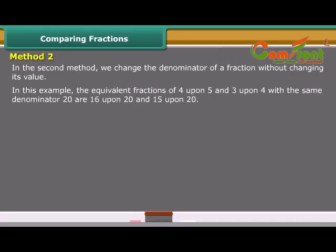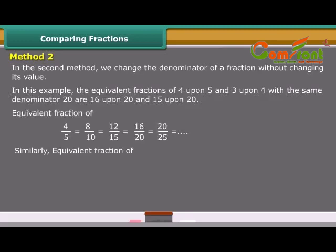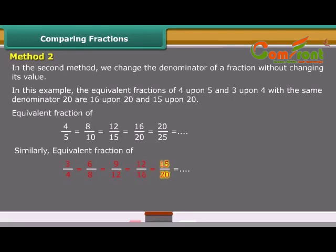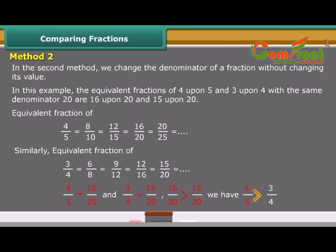In Method 2, we use equivalent fractions. For example, the equivalent fractions of 4 upon 5 and 3 upon 4 with the same denominator 20 are 16 upon 20 and 15 upon 20. Since 16 upon 20 is greater than 15 upon 20, we have 4 upon 5 greater than 3 upon 4.